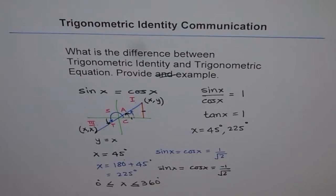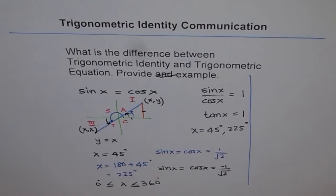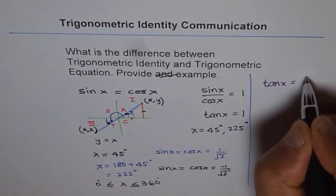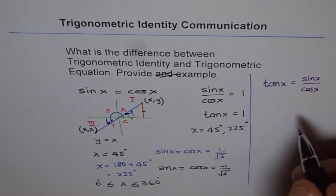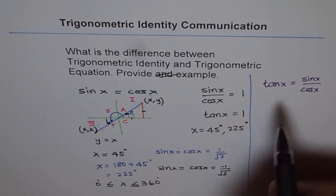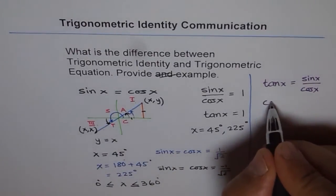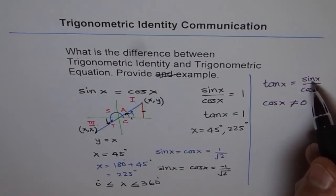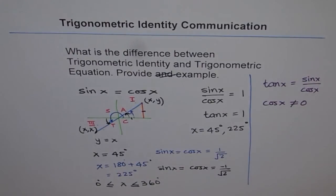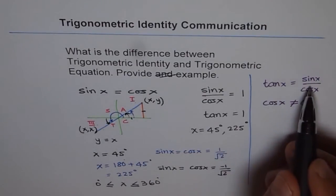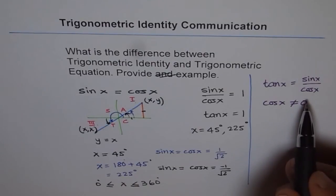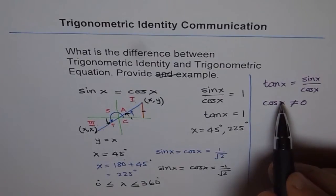But when we say trigonometric identity, we are saying that the equation is true for all values in the domain. For example, if I write tan x equals sin x over cos x, then this becomes a trigonometric identity. Tan x equals sin x over cos x over the entire domain. The only restriction is that cos x should not equal 0, because then the function is not defined. So that becomes an identity — an equation that is equal for all values in the entire domain.